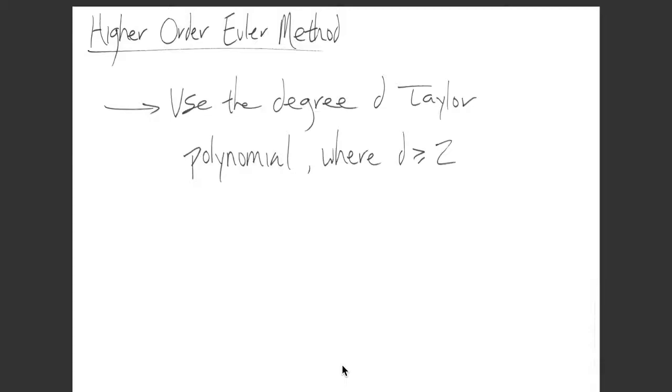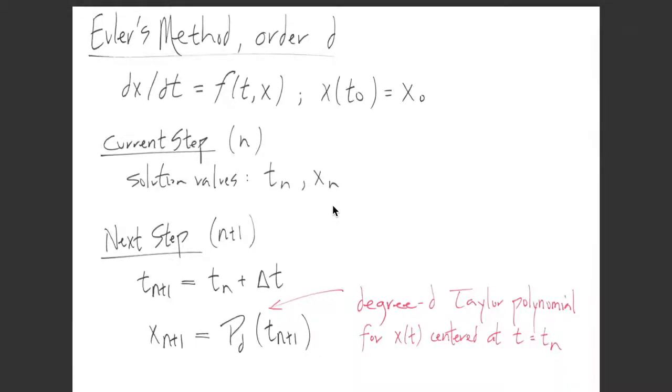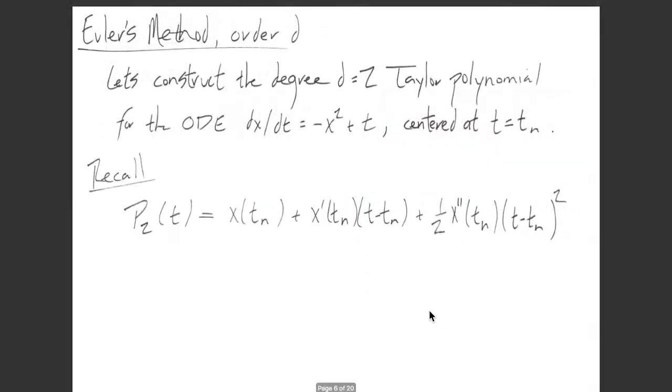What we're going to explore today is using higher degree Taylor polynomials to possibly get more accuracy. This is called a higher order Euler method. We'll let D denote the degree of the Taylor polynomial used, bigger than one.